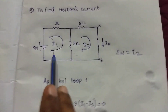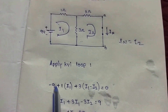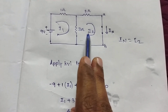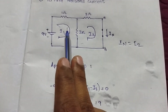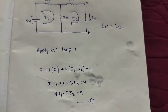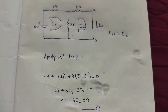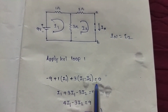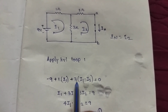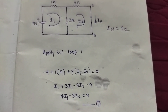Applying KVL to loop 1: the sum of all voltages equals zero. So: minus 9V plus I1 plus 3(I1 minus I2) equals zero. Simplifying: 1·I1 plus 3·I1 gives 4·I1, so 4I1 minus 3I2 equals 9. This is the first equation from loop 1.